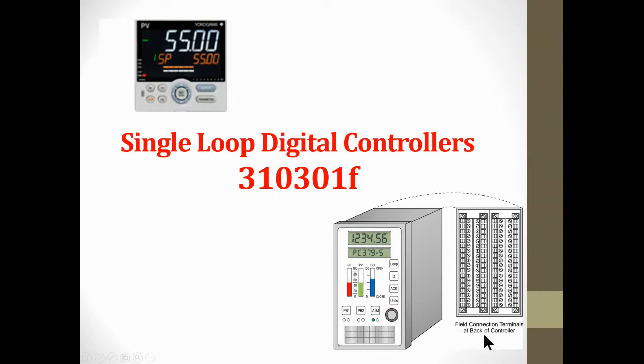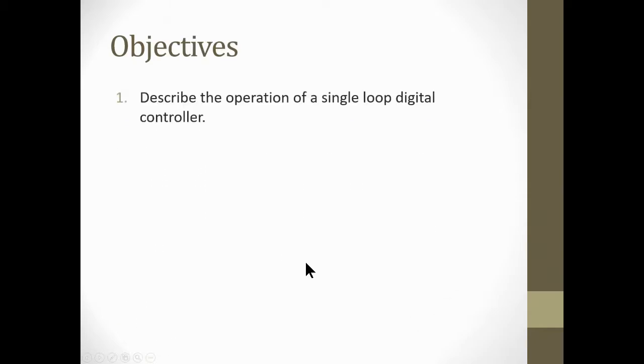We'll be talking about that. This one here down here is the older controllers where they had a whole bunch of basically indicators and LCDs and buttons on the front to control everything from there. The objectives are to describe the operation of the single loop digital controller and describe the function and applications of single loop digital controllers.